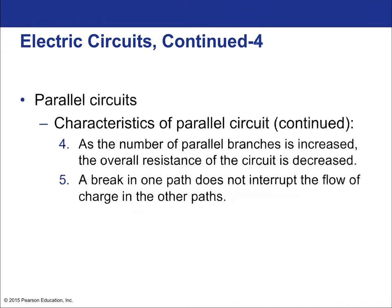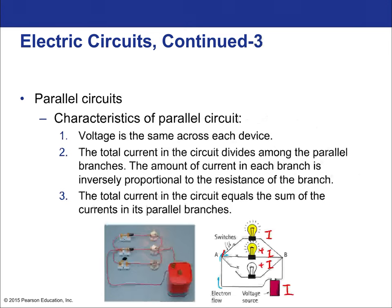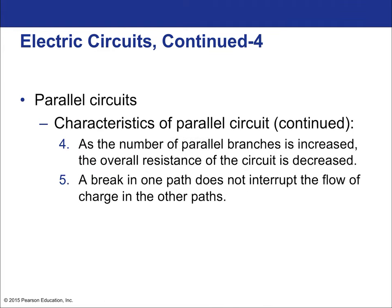As the number of parallel branches increases, the overall resistance actually decreases — whereas in a series circuit, more resistors means greater resistance. In parallel, more resistors means more junctions, which means more paths for current to take, making it easier to get from one terminal of the battery back to the other. A break in one path does not interrupt the overall circuit — that's the key advantage of parallel circuits: if one part breaks, the rest keeps working.